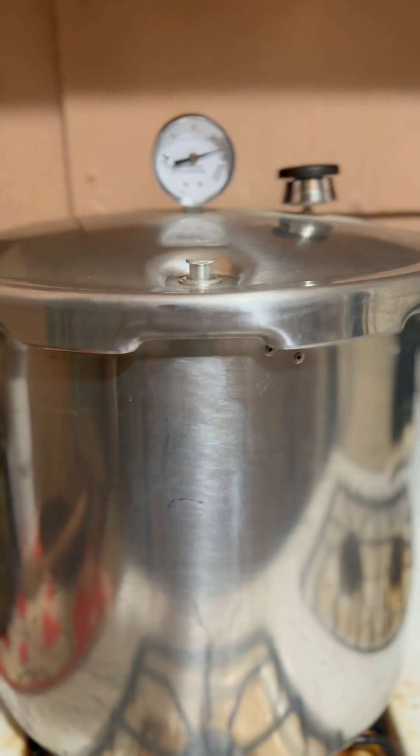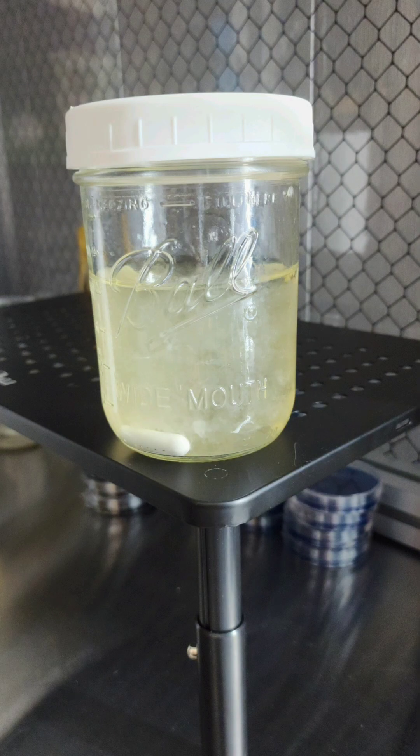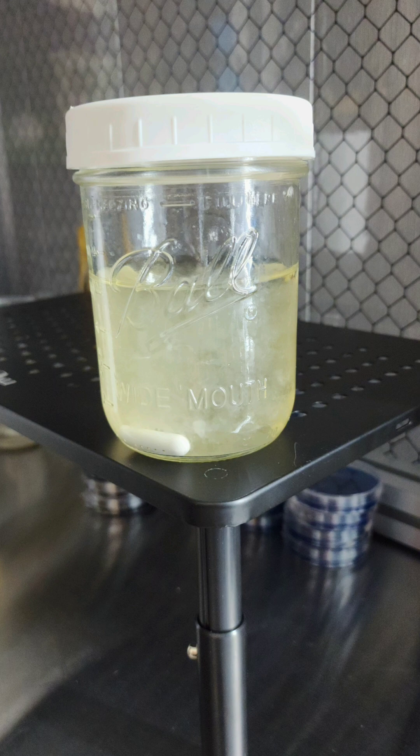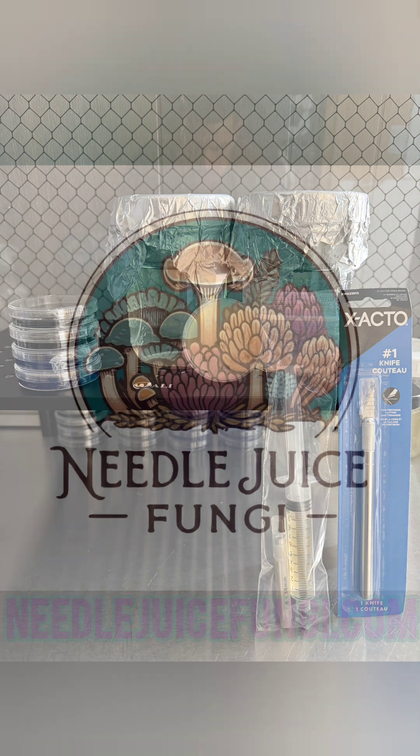All right y'all, once our 35 minutes is up, we're going to allow the pressure cooker to cool and depressurize naturally. Once the jars are cool enough, remove the aluminum foil and tighten the lid. Your liquid culture medium is now sterile and ready for inoculation. Well that's it everyone, thank you for watching our video. Stay tuned for our next video where we'll show you how to introduce mycelium into the nutrient-rich medium we've just prepared. Much love y'all.